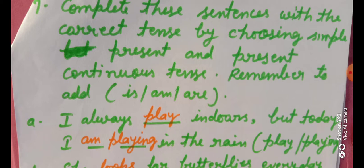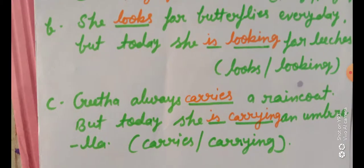The last question: Complete these sentences with the correct tense by choosing simple present or present continuous tense. Remember to add ISMR. In this question, aapko simple present tense aur present continuous tense ke saath sentence complete karna tha aur ISMR ka use karna tha. A) I always play indoors but today I am playing in the rain. B) She looks for butterflies everywhere but today she is looking for leeches. C) Gita always carries a raincoat but today she is carrying an umbrella.